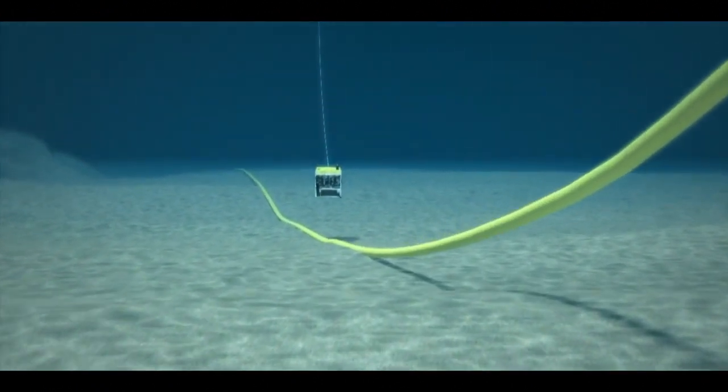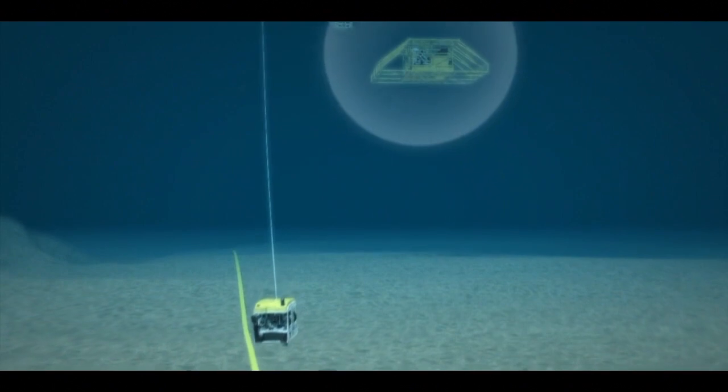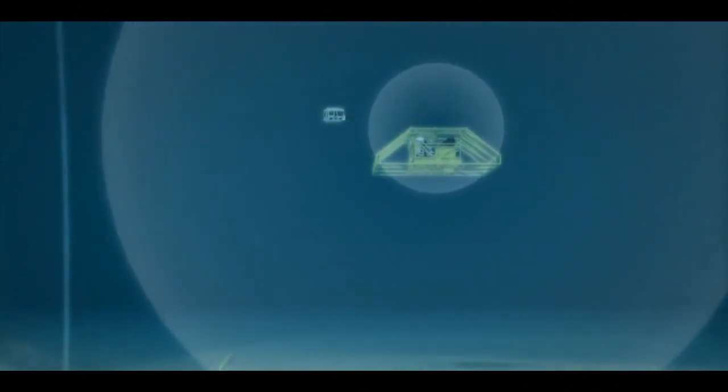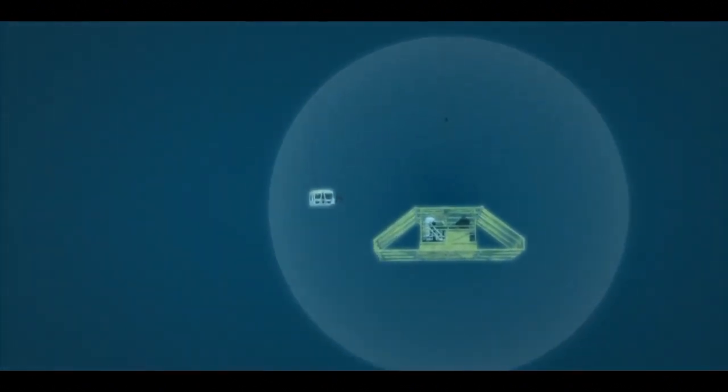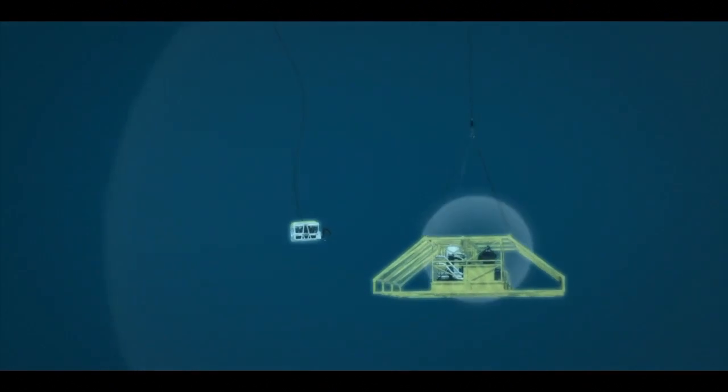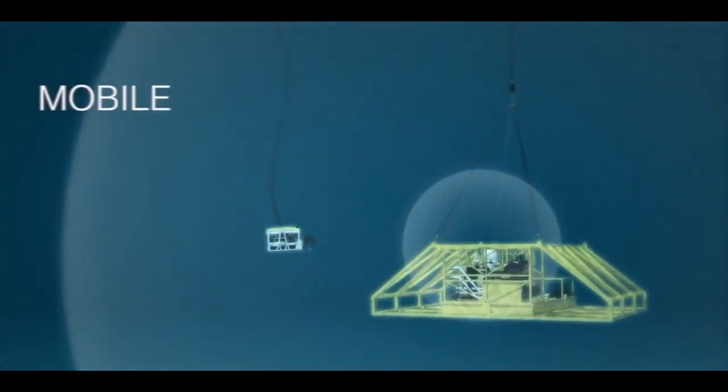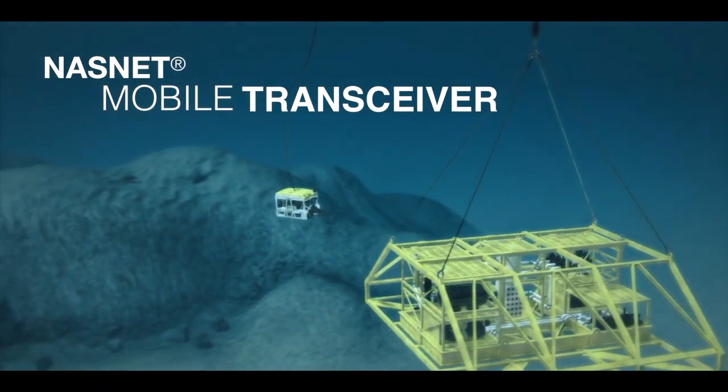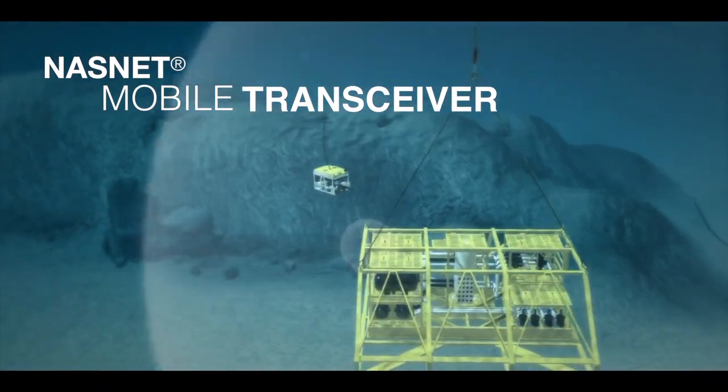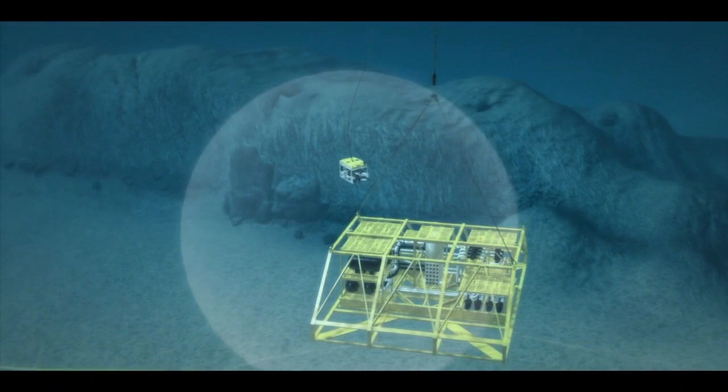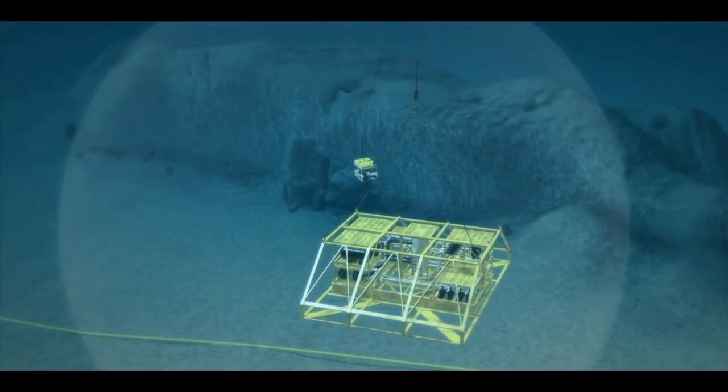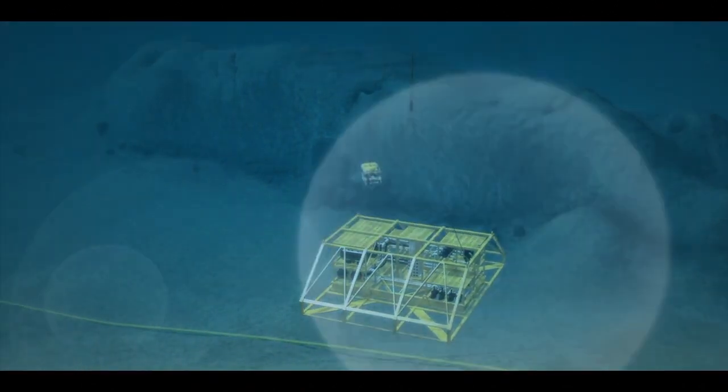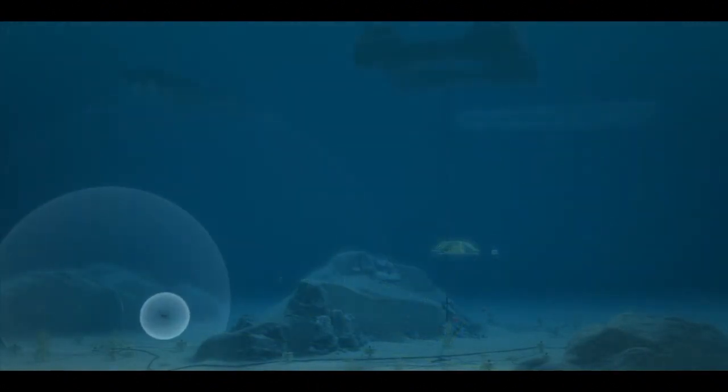Structure positioning can be undertaken in a NASNET field by employing NASNET mobile transceivers, MTRX, to establish the structure's position and orientation. MTRX can also relay data from external sensors, such as a gyro. Once the structure is installed, NASNET can also be used to establish accurate three-dimensional metrology measurements required for accurately fitting spool pieces and jumpers.